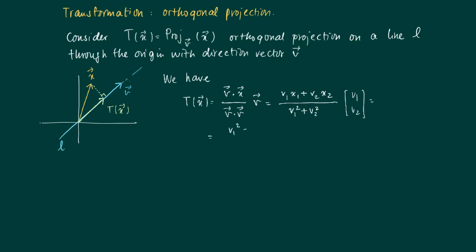So we obtain the vector if we multiply through. We get v1 squared x1 plus v1*v2*x2, and on the second coordinate we get v1*v2*x1 plus v2 squared x2, divided by v1 squared plus v2 squared.